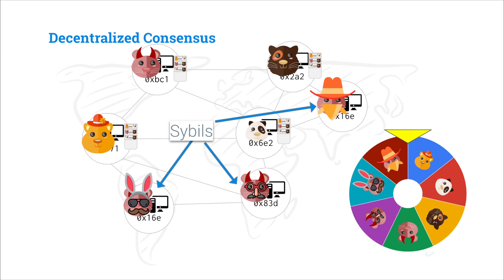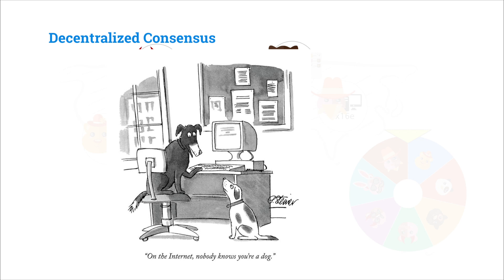These fake nodes that Mallory has created are called sybils. Sybils are forged identities in a peer-to-peer network used to subvert some system. Through the magic of things like VPNs, you can spoof your IP address, spoof where you are, and hide your identity. In a peer-to-peer network, there's no way to know if you're a sybil node or an actual new person trying to connect to the network.